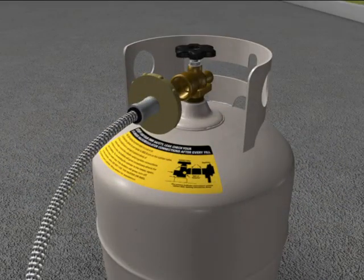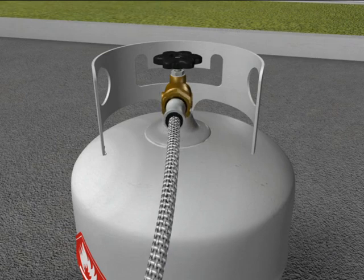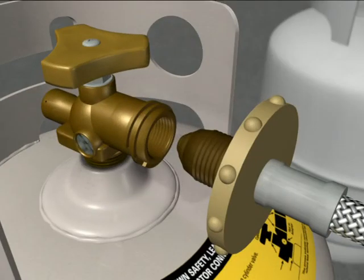Attach the leaking or overfilled cylinder to an approved decant hose and the decant hose to the receiving cylinder. You may need to use a filling adapter.